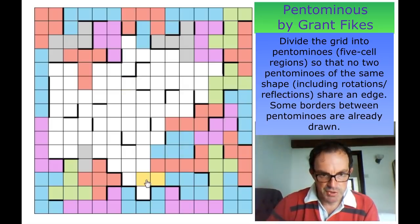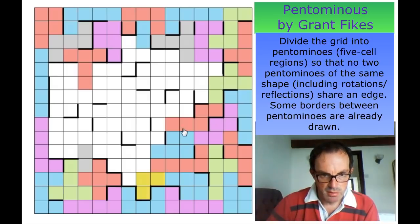This region — those three squares must be the same. We've got to be careful: there's an X pentomino there so we can't do that with this one.